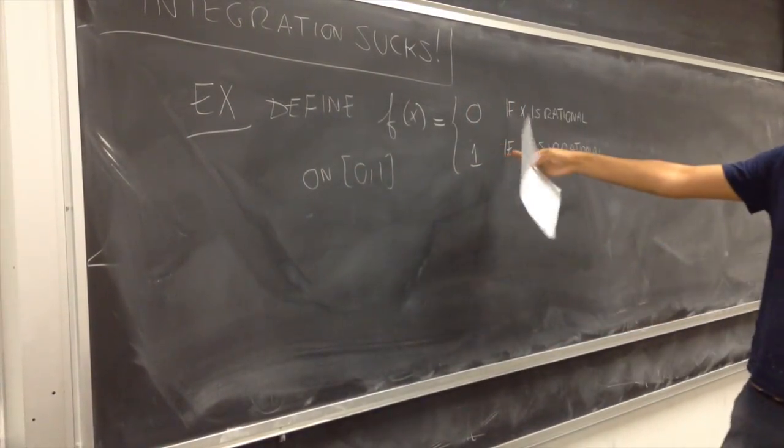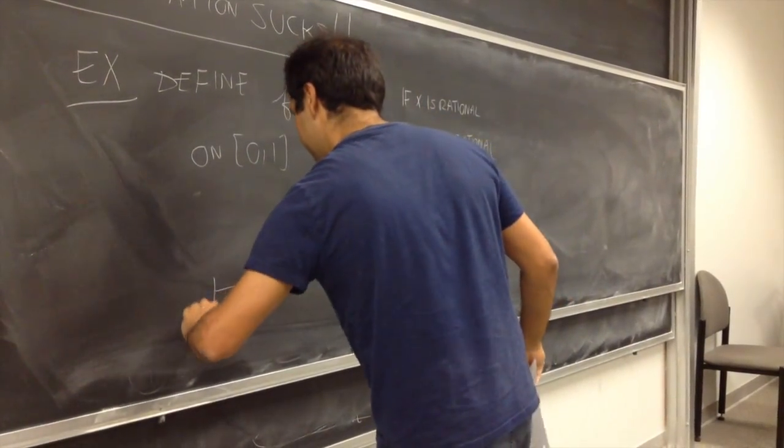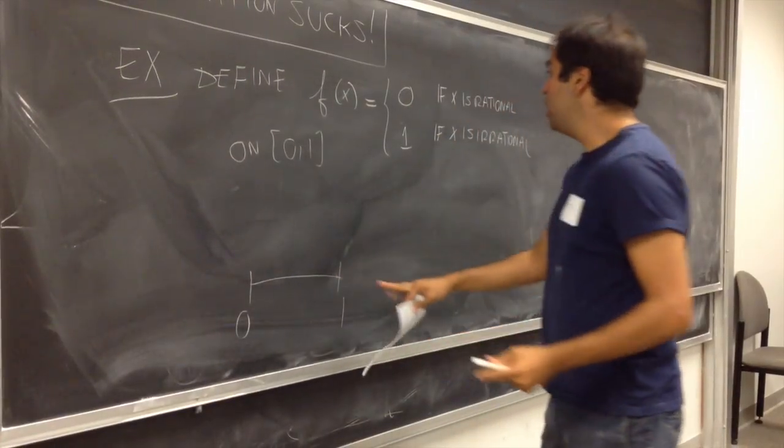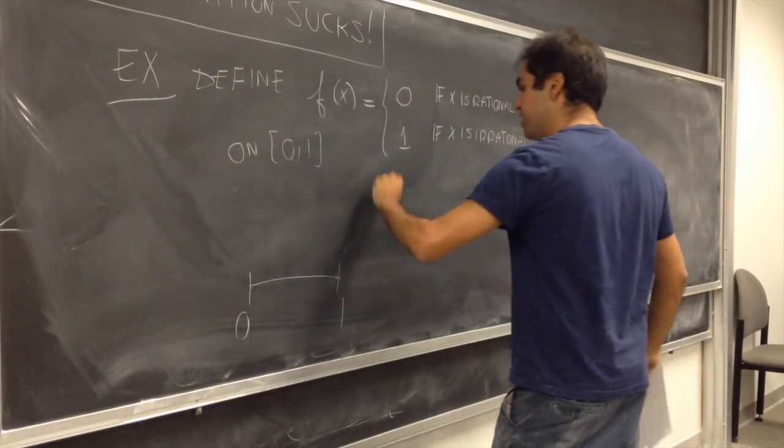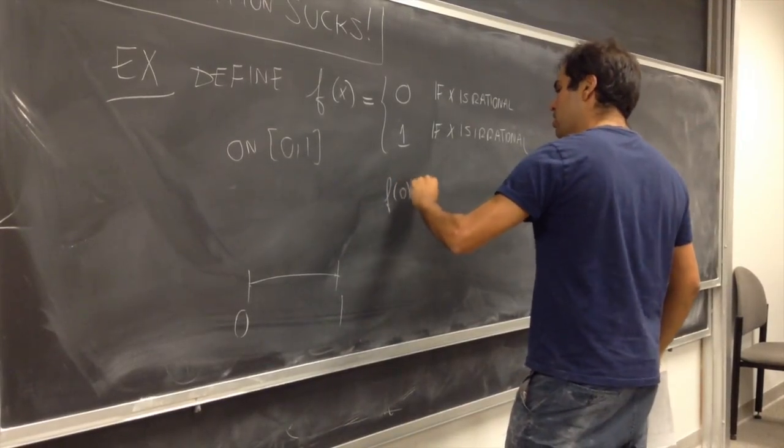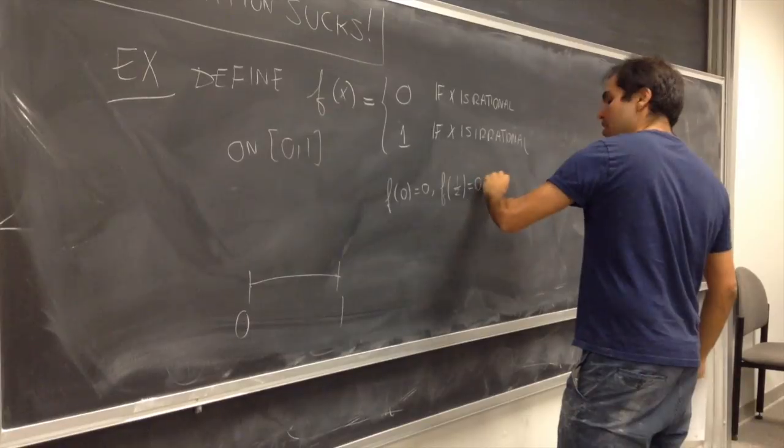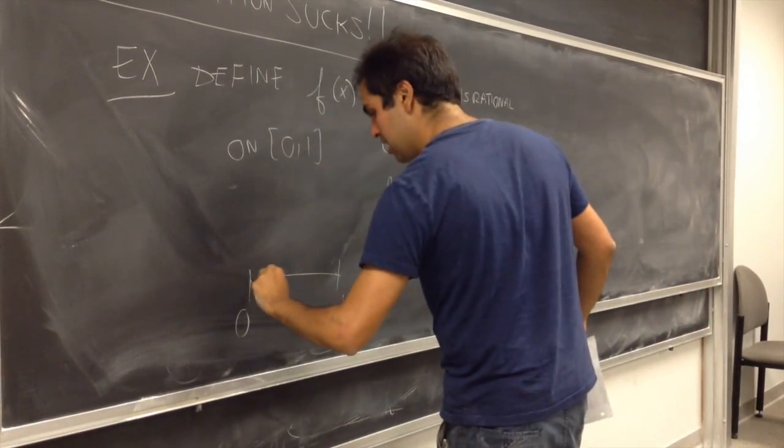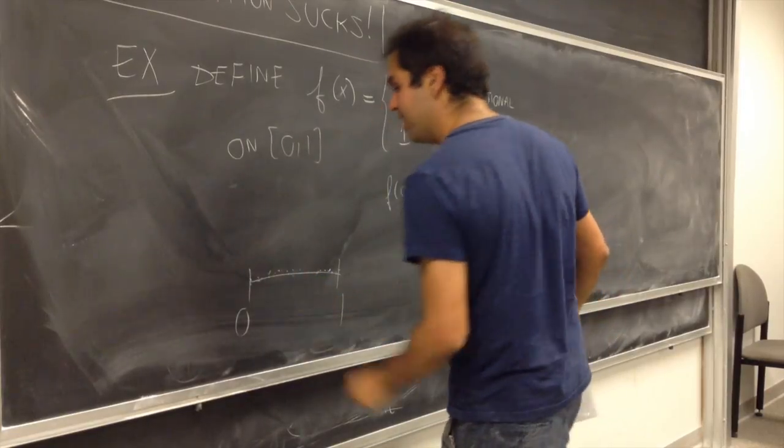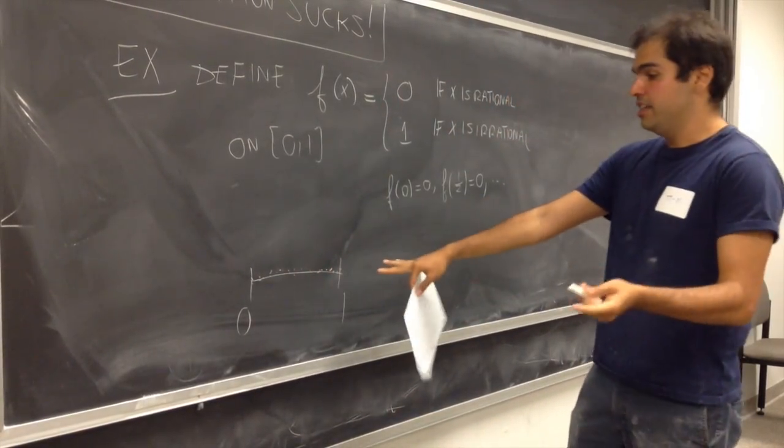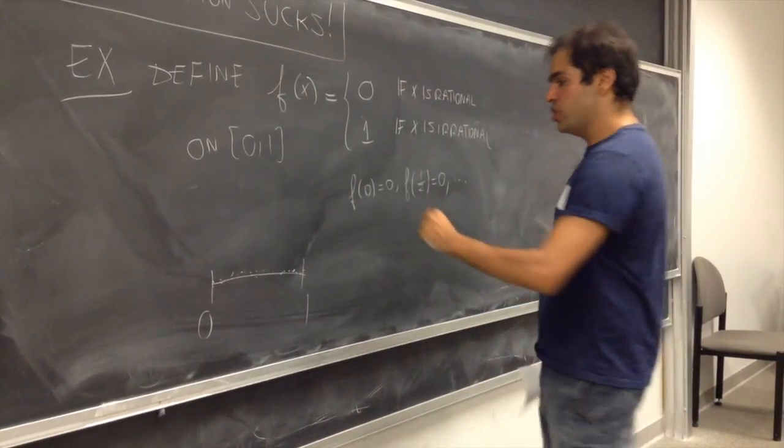So you see, this function is very badly behaved. So it's from 0 to 1. And when x is rational, it's 0. So f of 0 equals 0, f of 1 half equals 0. So it's 0 at a lot of points. The rational numbers are dense in 0 comma 1. So there are a lot of points. But if it's irrational, it's 1.